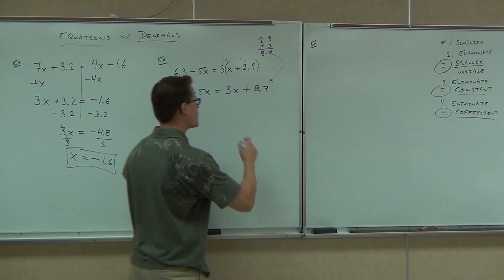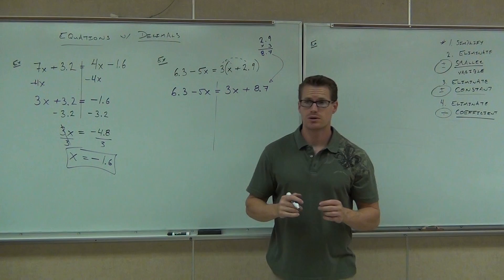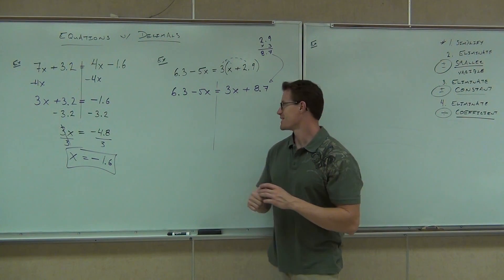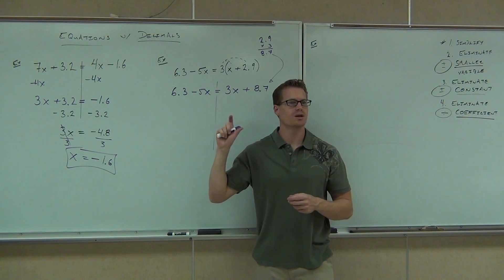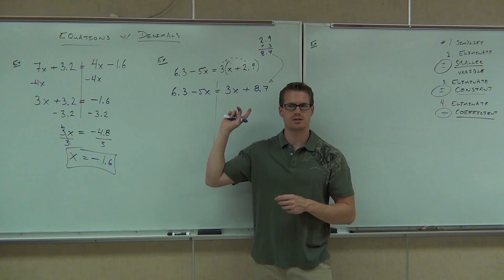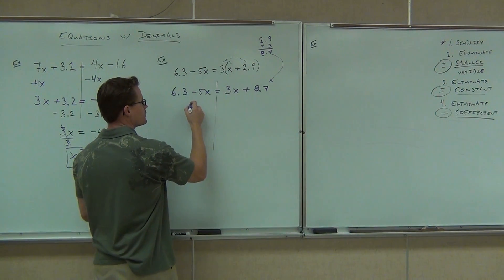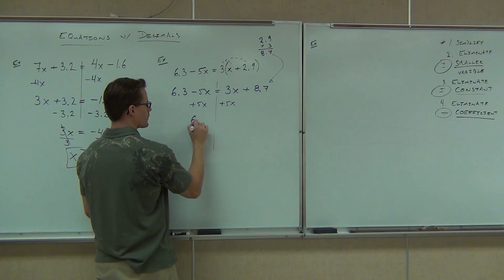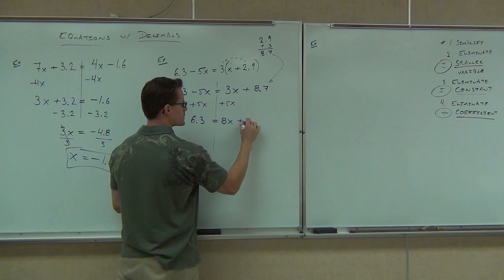Tell me something, folks. On this problem, do we have two variables? Yes. Do we have any like terms? No. Oh, good. Yeah, that's perfect. We don't have any like terms. They're on different sides. However, we do have a smaller variable here. What are we going to get rid of? The minus 5x or the plus 3x? The minus 5x. Great. Keep it positive. So add 5x to both sides. 6.3 equals 8x plus 8.7.